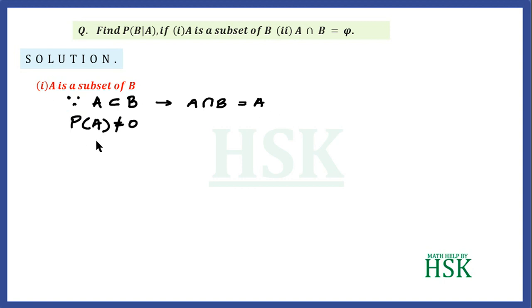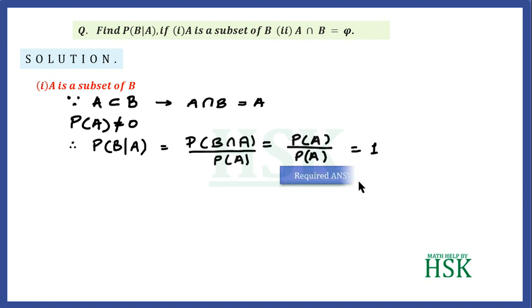So therefore I can write that probability of B given A is equal to probability of B intersection A upon probability of A, and it is also given to us that probability of A is unequal to 0, which we have already pointed out. And this would be equal to probability of A upon probability of A, and this would be equal to 1. So this would be my required answer. So in the first part, probability of B given A when A is a subset of B is equal to 1.